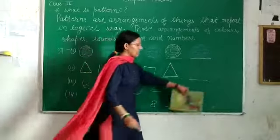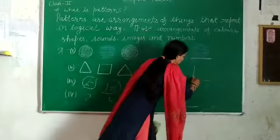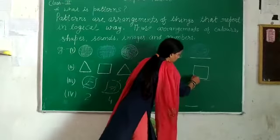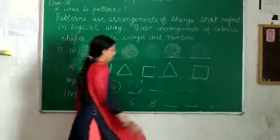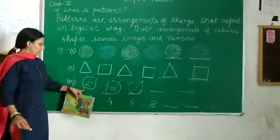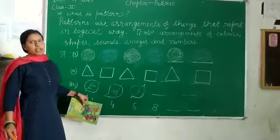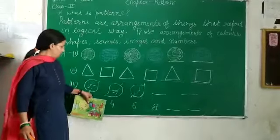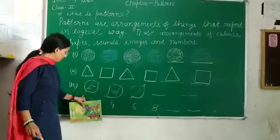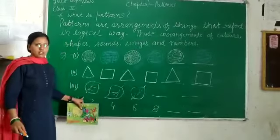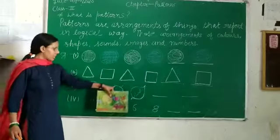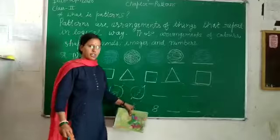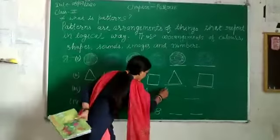Now next comes a circle. Here is the pattern of things — this is down, this is head up, this is down, this is upper.